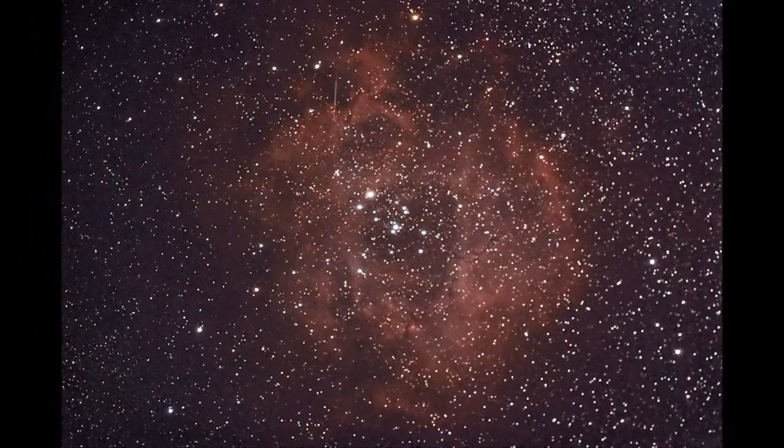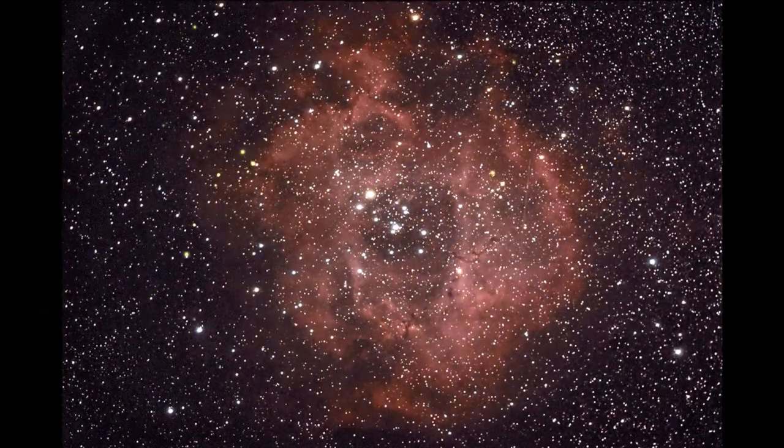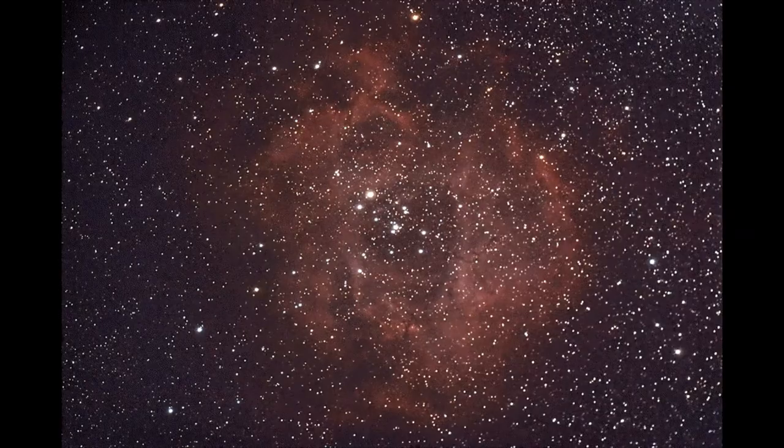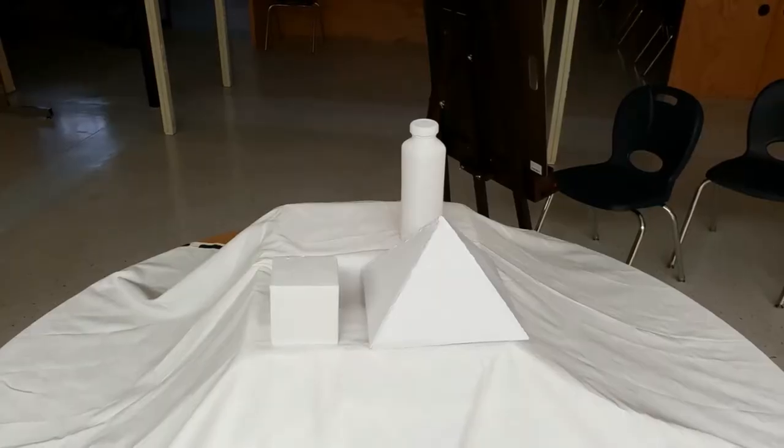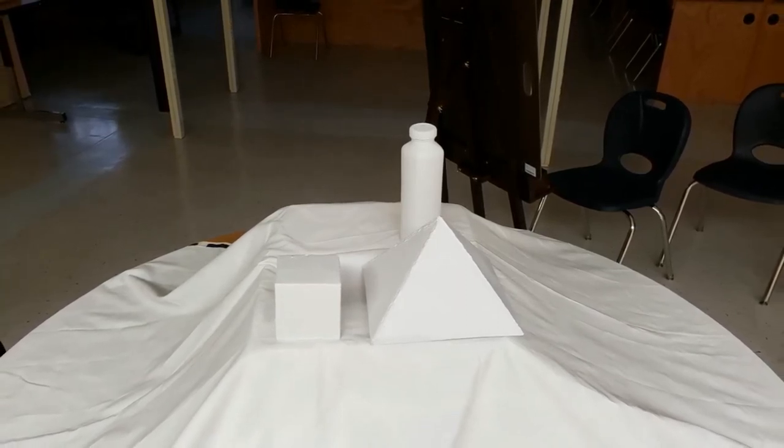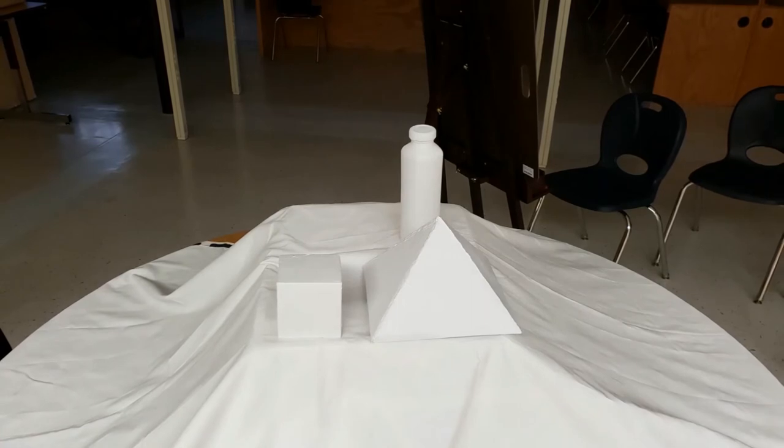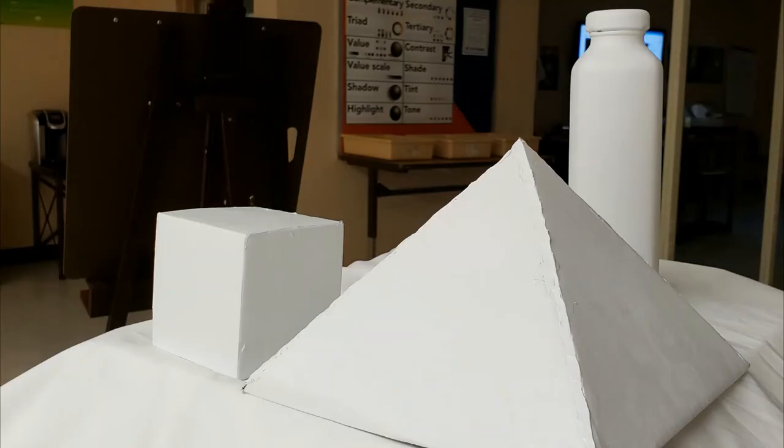One of the most important things to consider when creating a good composition is space. A common mistake beginning artists make is trying to make sure that all the objects fit perfectly on their paper. However, this usually ends up making the objects too small for a good composition. Instead of thinking about how you can fit all of your objects in your artwork, think about how you can have your objects fill the space. This may mean that some of the objects are slightly cropped out of the final image.